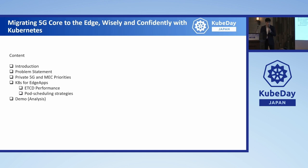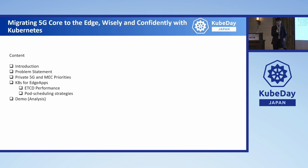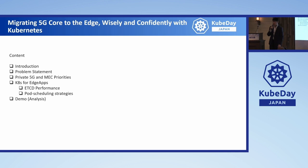The contents for today — I want to try to be quite simple on many of the 5G topics. First, an introduction, then I'm going to mention the problem for this presentation: what is 5G Edge, what is MEC if you have heard of it, and what strategies can be applied in Kubernetes to achieve 5G core at the edge, covering etcd performance, pod scheduling. And at the end, I'm going to do a demo analysis — just a summary.